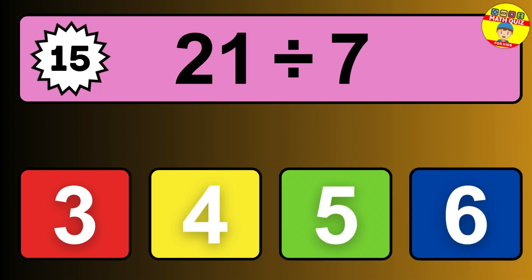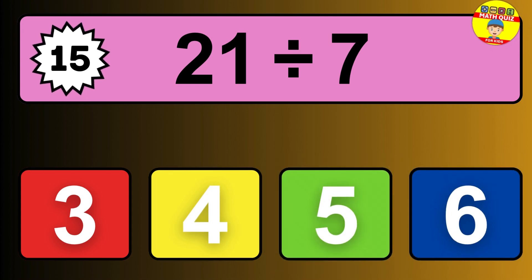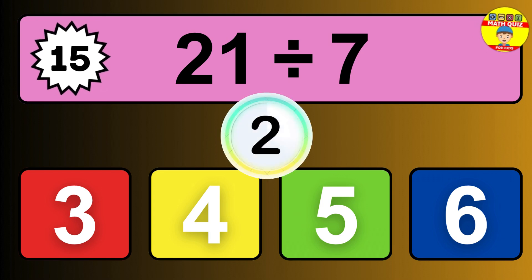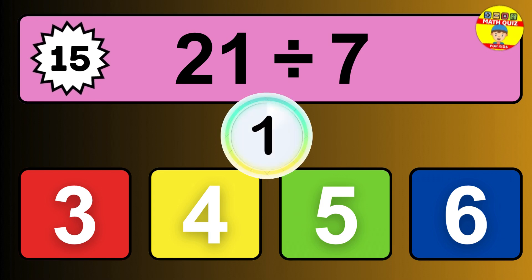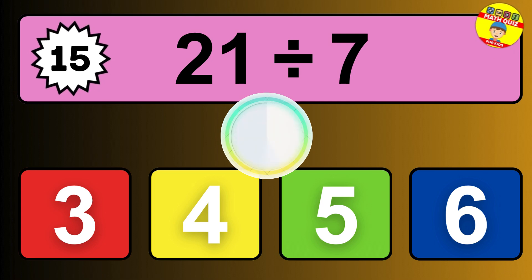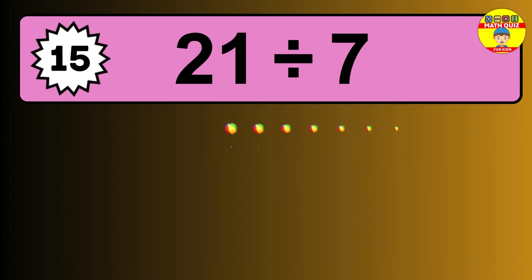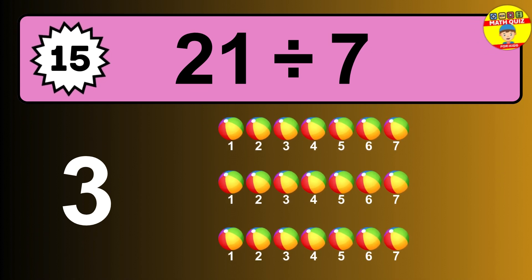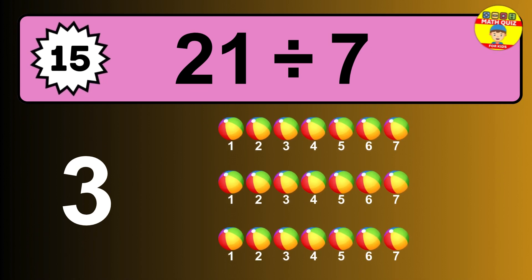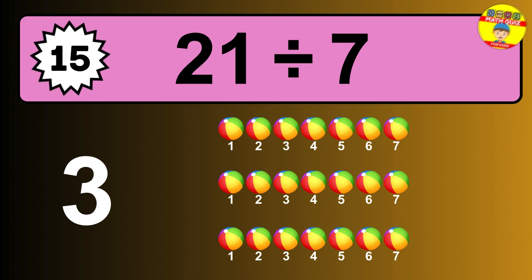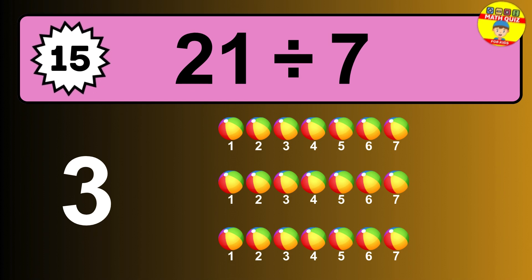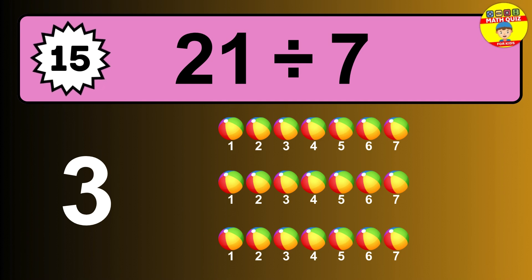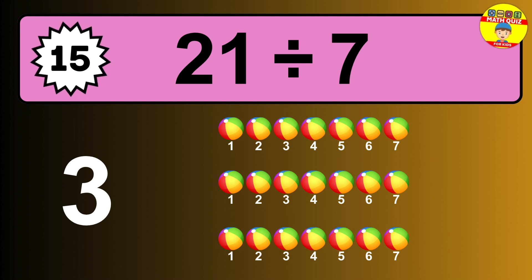21 divided by 7 is... time to think. Let's go to the solution. Divide the number 21 by 7. Each group contains 7 units. So dividing 21 by 7 results in 3 equal groups. Thus, the result is... 21 divided by 7 equals 3.